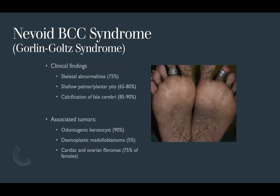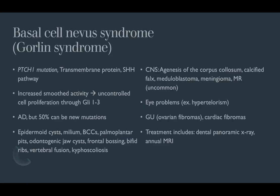Nevoid basal cell carcinoma syndrome, also known as Gorlin-Goltz syndrome, includes skeletal abnormalities, palmar plantar pits, calcification of the falx cerebri, odontogenic keratocysts, desmoplastic medulloblastoma, and cardiac and ovarian fibromas. Remember the PTCH1 mutation, sonic hedgehog pathway overactivation, and vismodegib as treatment. Epidermoid cysts and multiple BCCs are also very common in these patients.